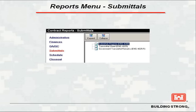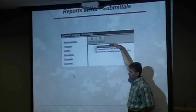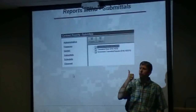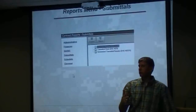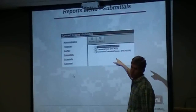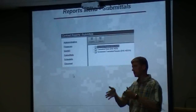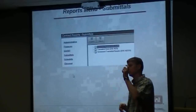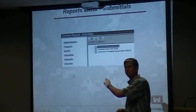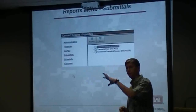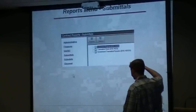Submittals. This submittal register is where you're going to see that. Once you link the schedule items to the open submittal items, the submittal register will be filled out. There are five or six columns in the middle — submittal needed by, approval needed by — and it will fill out those blanks as soon as you link those up. That's where you'll find it.